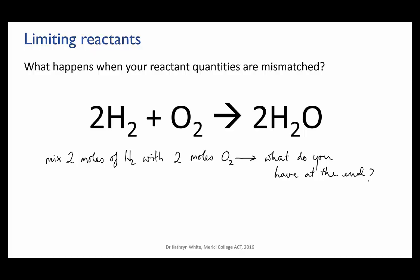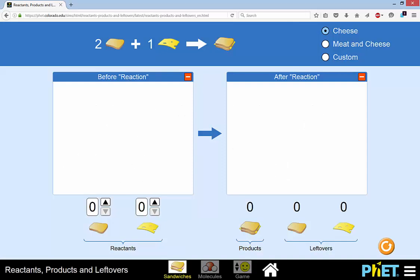Well you may be able to work this out, but let me give you another analogy. I'm going to use this nice simulation from PhET at the University of Colorado, which uses the analogy of making sandwiches. So here we have a reaction in which two slices of bread are combining with one slice of cheese to make one cheese sandwich. So the ratio of bread to cheese reactants is two to one.